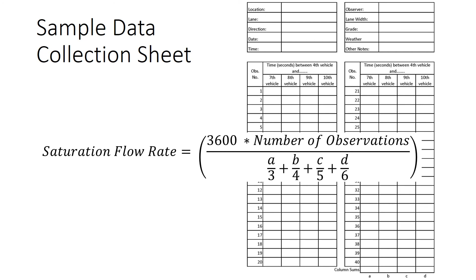The equation for saturation flow rate is: 3,600 (seconds in an hour, to convert to an hourly flow rate) multiplied by the number of observations, divided by a denominator. The denominator sums each column: column A (seventh vehicle) divided by 3 — there are three vehicles between the fourth and seventh. Column B (eighth vehicle) divided by 4. Column C (ninth vehicle) divided by 5. Column D (tenth vehicle) divided by 6, because there are six vehicles between the fourth and the tenth.